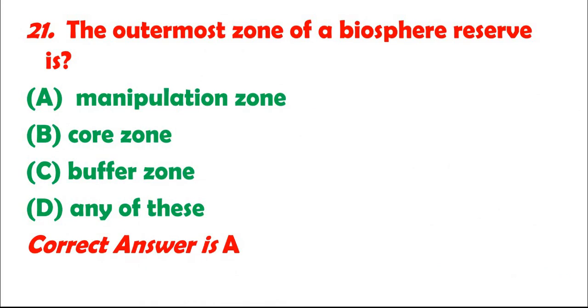Question 21: The outermost zone of a biosphere reserve is: A. Manipulation zone. B. Core zone. C. Buffer zone. D. Any of these. Correct answer is A.